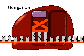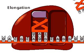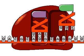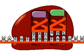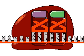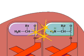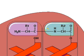Elongation begins when a second tRNA with its attached amino acid approaches. The tRNA matches its anticodon with the second codon of the mRNA and settles into the A site. The first amino acid is transferred from its tRNA to the second amino acid by another enzyme.